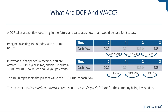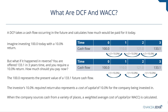The investor's 10% required return also represents a cost of capital of 10% for the company being invested in. You're getting a 10% return, but the company is having to pay out this extra money — it's a cost to them, and we call that a cost of capital. When a company sources cash from a variety of places — such as an equity investment and borrowing from a bank — a weighted average cost of capital, or WACC, is calculated. That WACC is the average cost of capital to the company, or the average required return from investors.